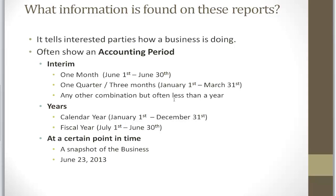There are interim accounting periods that can be a month, three months, six months, or nine months, but it's often less than a year. We have accounting periods that are years, and the two main ones are calendar years — companies that keep their accounting systems to run from January 1st to December 31st — and fiscal years, which run their accounting system from July 1st to June 30th. Examples of those may be schools, government agencies, or nonprofits.